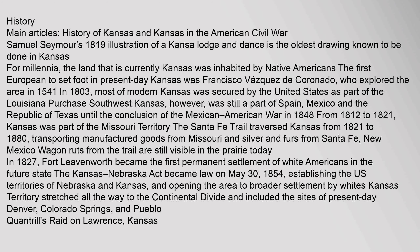From 1812 to 1821, Kansas was part of the Missouri Territory. The Santa Fe Trail traversed Kansas from 1821 to 1880, transporting manufactured goods from Missouri and silver and furs from Santa Fe, New Mexico. Wagon ruts from the trail are still visible in the prairie today. In 1827, Fort Leavenworth became the first permanent settlement of white Americans in the future state. The Kansas-Nebraska Act became law on May 30, 1854.